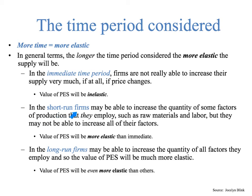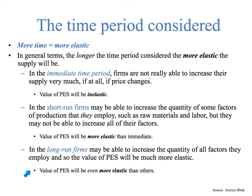In the short run — maybe six to eight months — firms may be able to increase the quantity of some factors of production they employ, like hiring more workers or acquiring more raw materials, but they may not be able to increase all factors. They could hire more people and cram them into a factory, but couldn't necessarily create a new factory in the short run. However, in the long run, firms may be able to increase the quantity of all factors of production, and so the value of PES will be much more elastic. Over the long term, a firm could build an entirely new factory and produce more if the price of their product goes up.